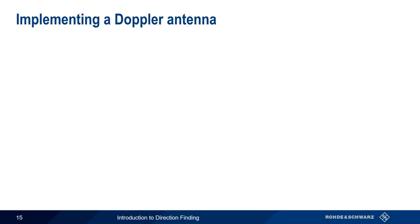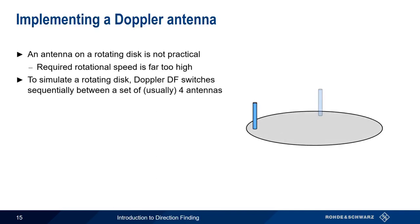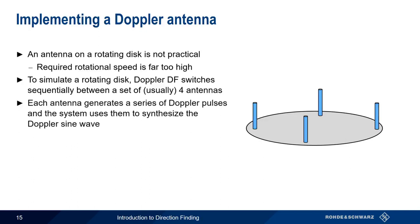However, an antenna on a rotating disk is not practical — the required rotational speed is much too high to be physically implemented. We can simulate a rotating disk by using an array of antennas, usually four, and then rapidly switching between them. Each of the antennas is used to generate a series of Doppler pulses, and the system uses these pulses to synthesize the Doppler sine wave. The switching between the antennas must be very fast in order to accurately synthesize the Doppler sine wave using inputs from four discrete antennas.